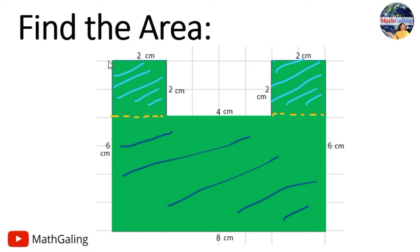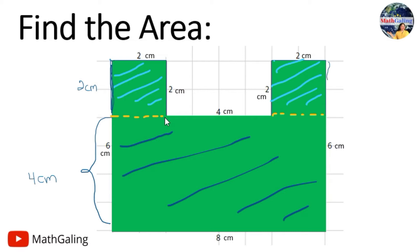If the width is six centimeters and we cut two centimeters from it, then the remaining side is six minus two, which is four centimeters. The length of the rectangle doesn't change because we didn't cut anything there, so it's still eight centimeters. The small squares each measure two centimeters, and the rectangle's width is four centimeters.